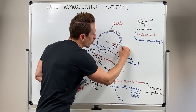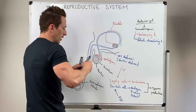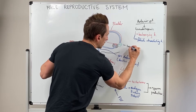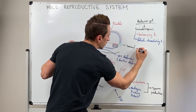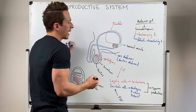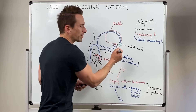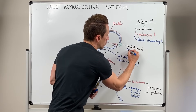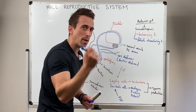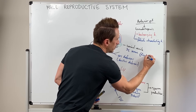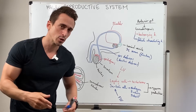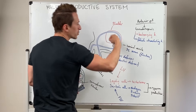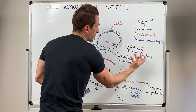The ductus deferens then joins together with a gland called the seminal vesicle. The seminal vesicles produce a really important fluid — actually two thirds of the volume of semen. One of its major components is fructose, which is an energy source for sperm, very similar to glucose. The seminal vesicles produce this seminal fluid which mixes with the sperm coming from the testes via the ductus deferens.